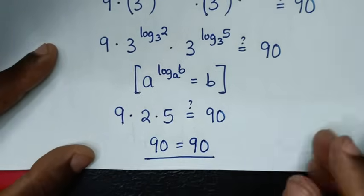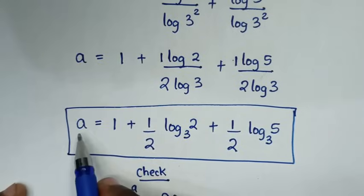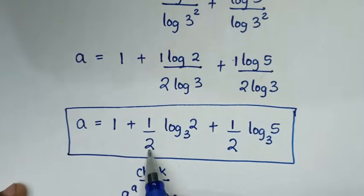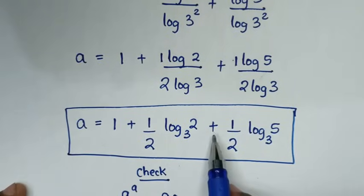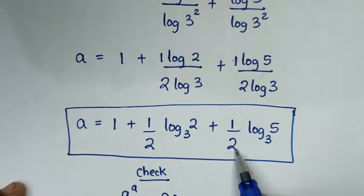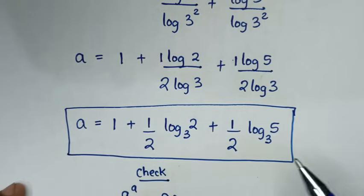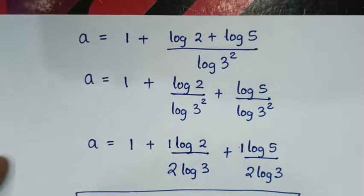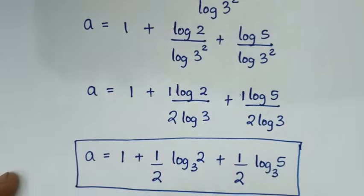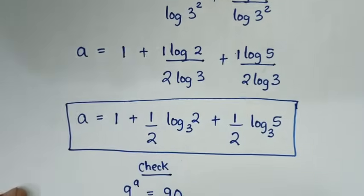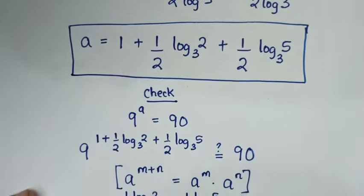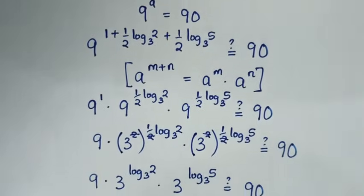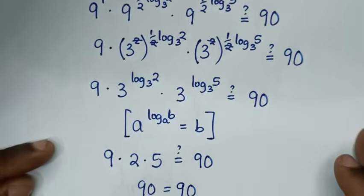So the value of a is 1 plus one half log base 3 of 2 plus one half log base 3 of 5. Thank you. Don't forget to subscribe to my channel, and see you in the next video. Bye bye.